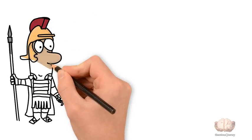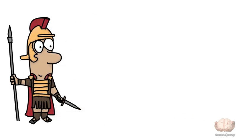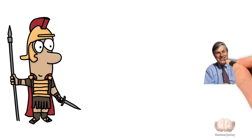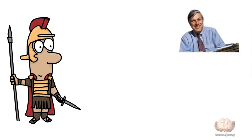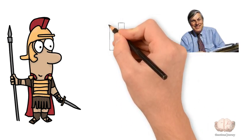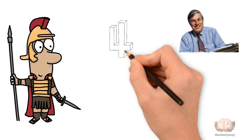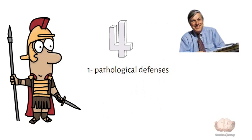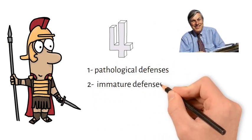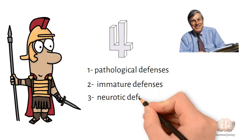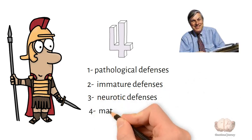The categorization of defense mechanisms into different levels was first proposed by George Emin Valent, an American psychiatrist and researcher. Valent divided defense mechanisms into four main levels based on their adaptiveness and maturity. The first level is pathological defenses, the second level is immature defenses, the third level is neurotic defenses, and finally, level four consists of mature defenses.